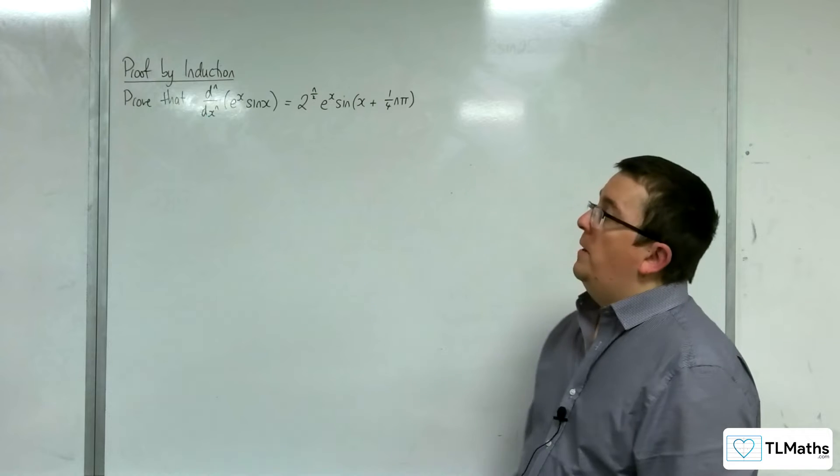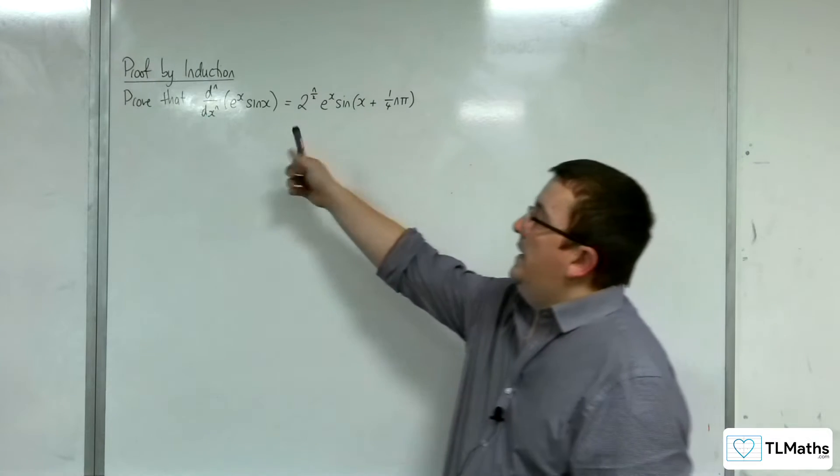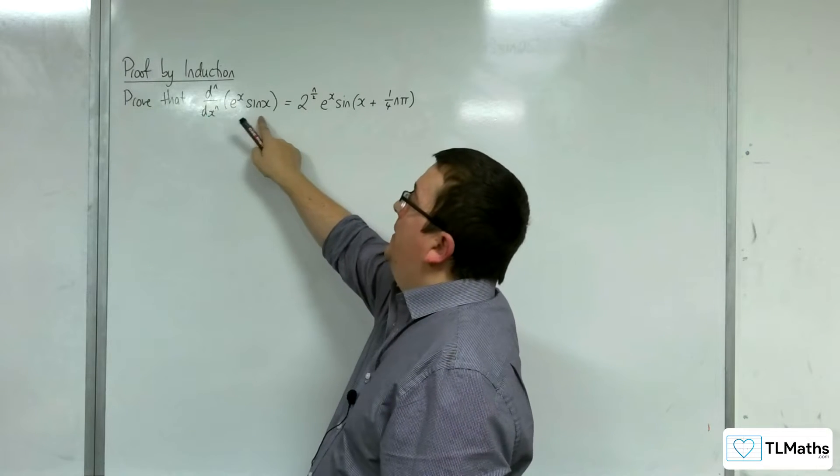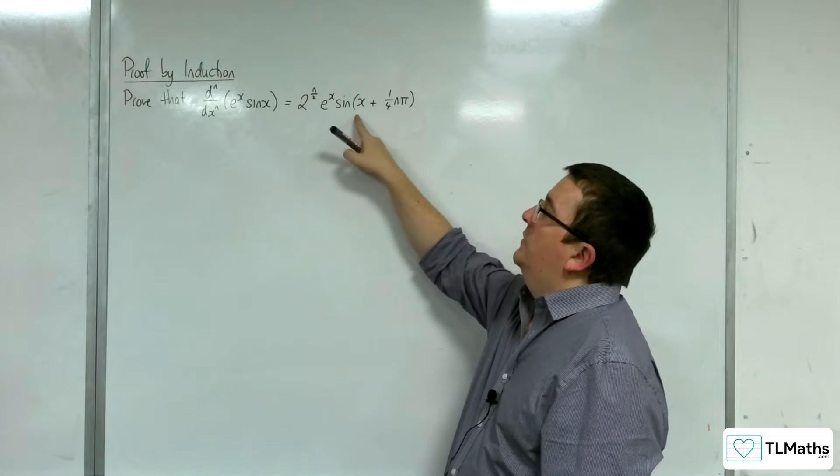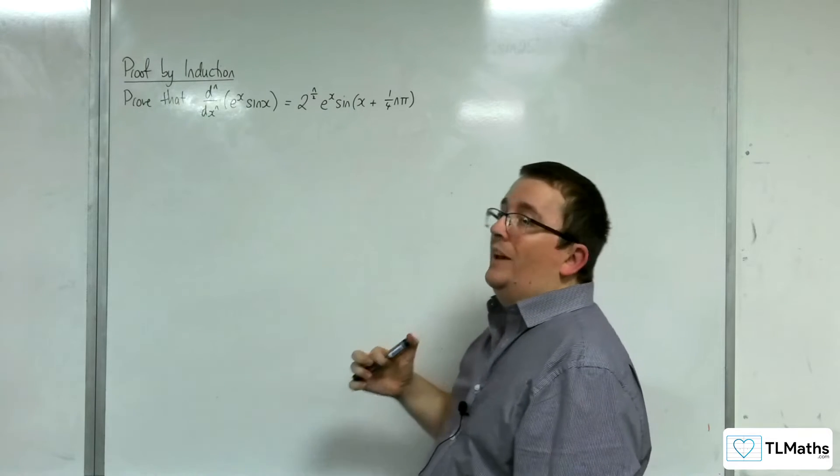In this video we're going to prove by induction that the nth derivative of e to the x sine x is equal to 2 to the n over 2 e to the x sine of x plus a quarter n pi.